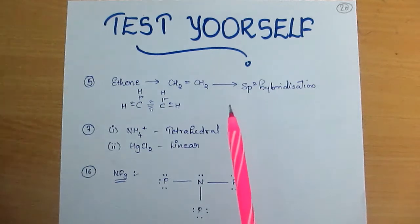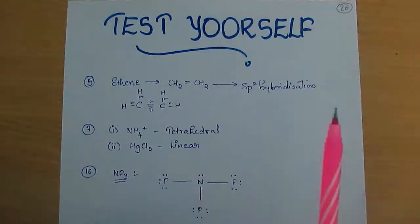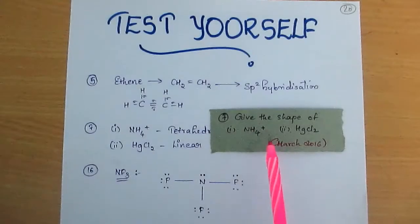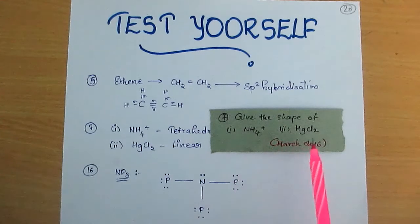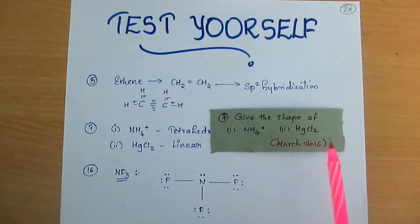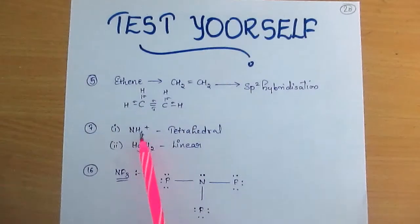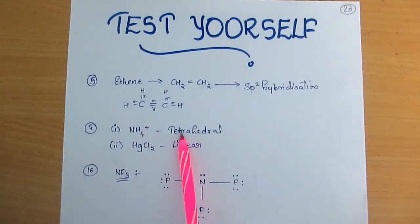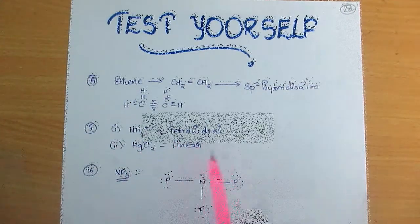The seventh question asks: give the shape of NH4+ and HgCl2, asked in March 2016. The answer: NH4+ has a tetrahedral shape, and HgCl2 has a linear shape.